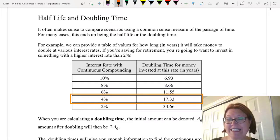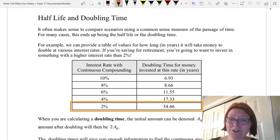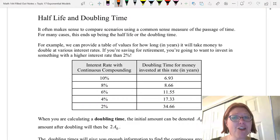At an interest rate of 4% it takes 17.33 years for your money to double. That's a long time. And then finally at 2% it takes 34.66 years for your money to double. So if you're saving for retirement you're going to want to invest in something with a higher interest rate than 2%.